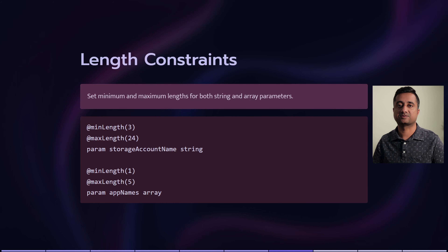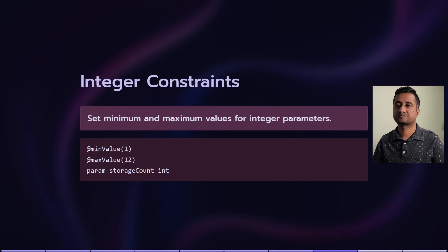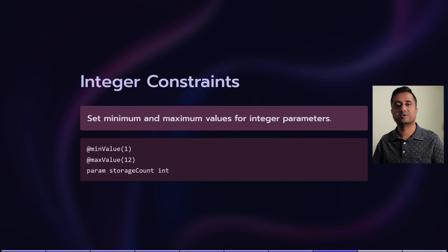Length constraints: for a storage account name, you want to keep it between 3 and 24 characters using min length and max length. The same applies to names — if you want an array of storage names, you can also set minimum and maximum length.